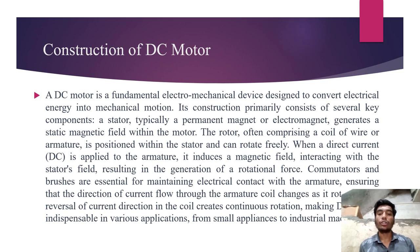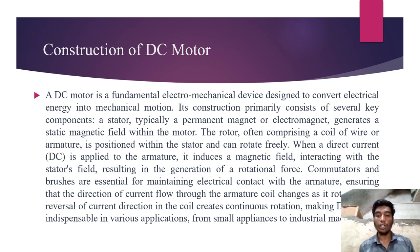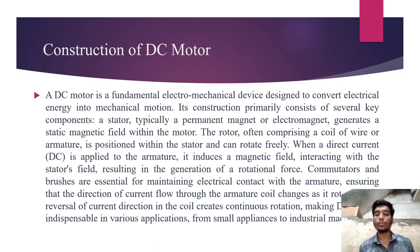The main work of the DC motor is to convert electrical energy to mechanical motion. Several key components include the stator — a permanent magnet or electromagnet that generates a static field within the motor, often comprising a coil of wire. The armature is positioned within the stator and can rotate freely. When a direct current is applied to the armature, it induces a magnetic field interacting with the stator's field, resulting in the generation of a rotational force. The commutator and brushes are essential for maintaining electrical contact with the armature, ensuring that the direction of current flow through the armature changes.